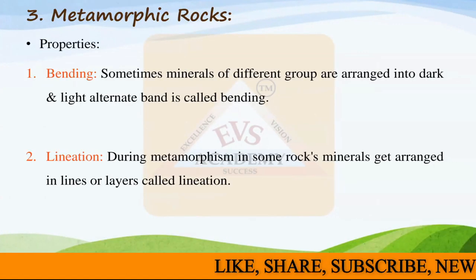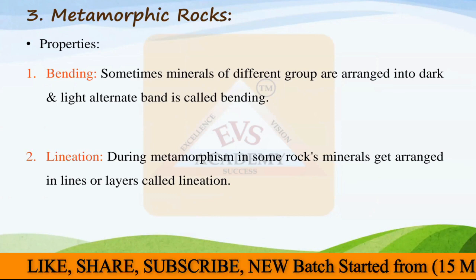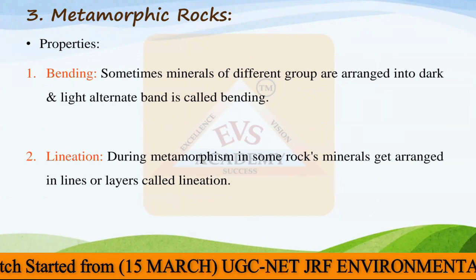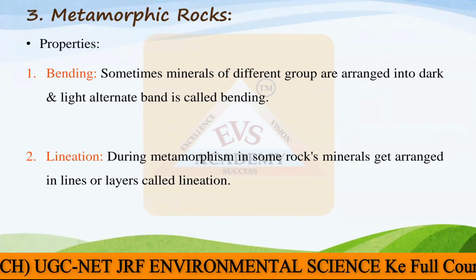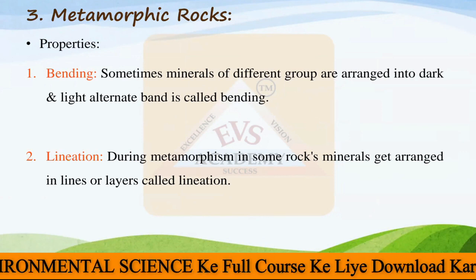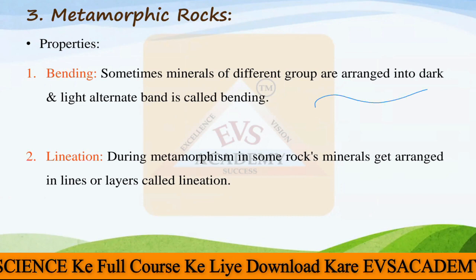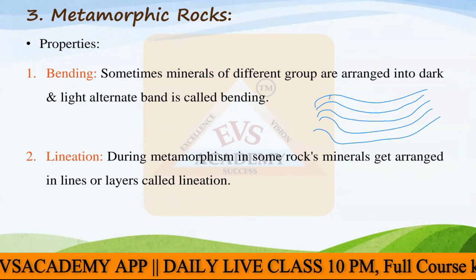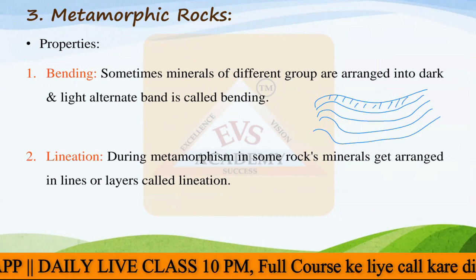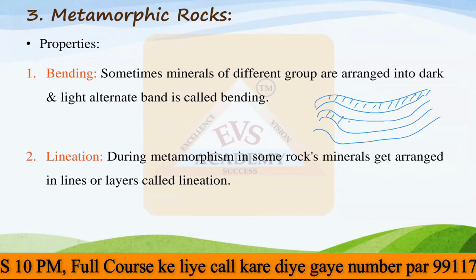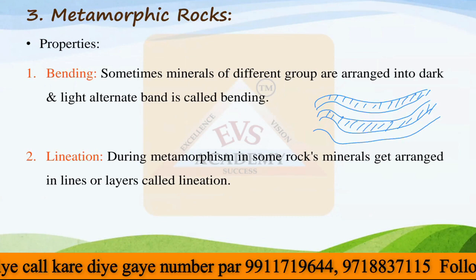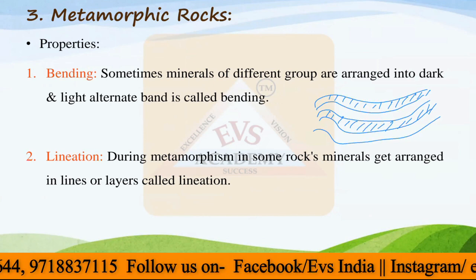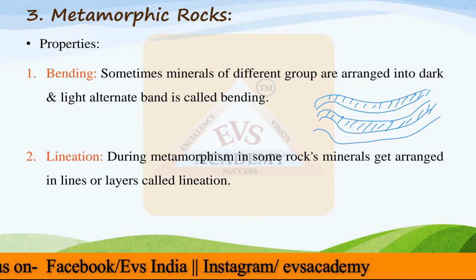Now, metamorphic rock properties. Two properties can be found in metamorphic rocks. The first property is called banding. In banding, minerals of different groups are arranged into dark and light alternating bands. So if you look at the rock, you see one layer of dark color, then one layer of light color, then dark again, then light — that alternating arrangement is called banding.